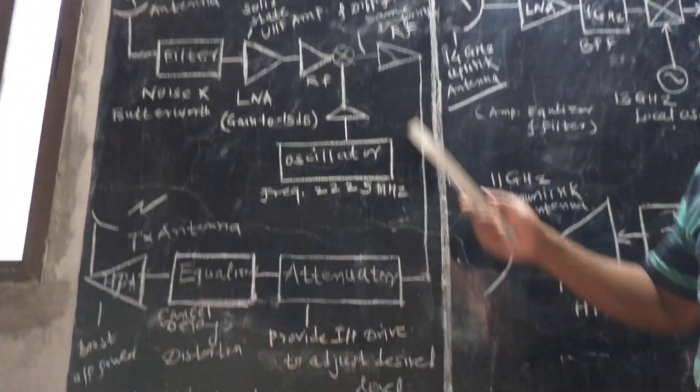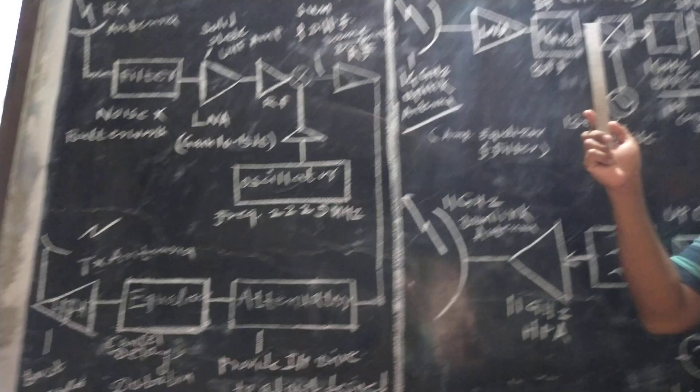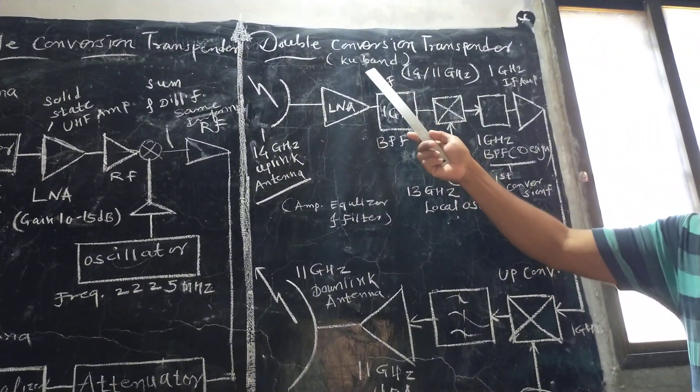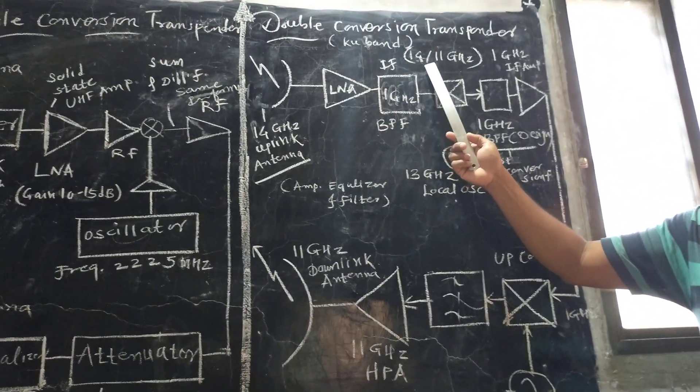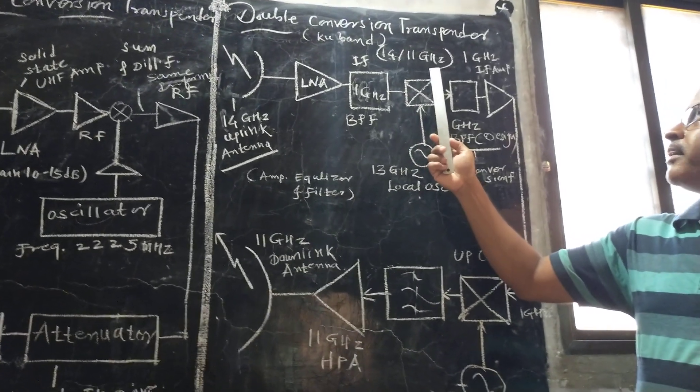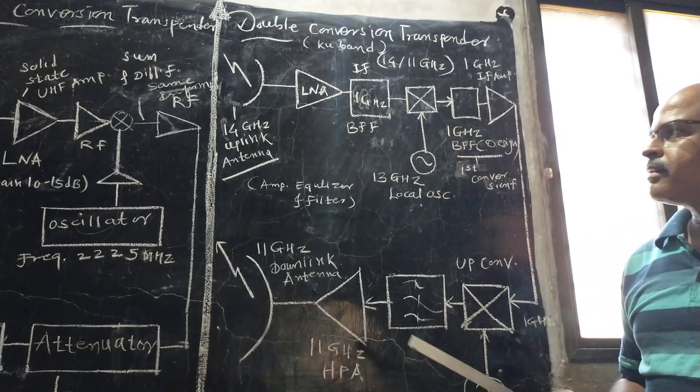This is the single conversion transponder. Next is the double conversion transponder. It is operated in KU band and is also called a 14-11 GHz double conversion transponder.